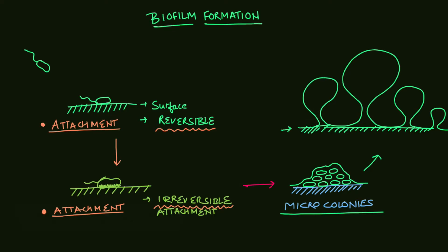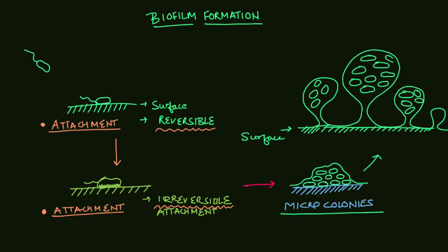After that you will have maturation, where three-dimensional colonies appear on the surface. As you can see here, cells are inside these three-dimensional colonies and they constitute a mature biofilm. This stage is called the maturation stage.